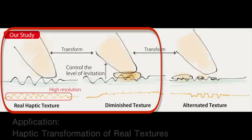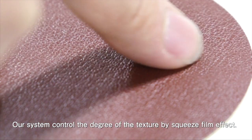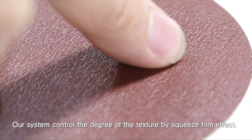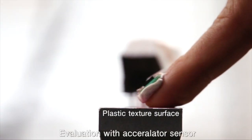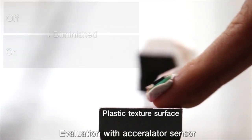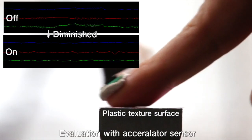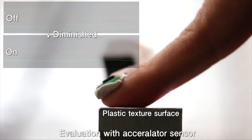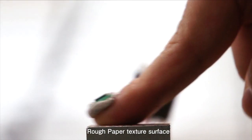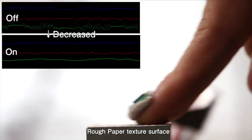The haptic transformation of real textures: Our system controls the degree of texture by squeeze film effect. The texture is diminished when the squeeze film is thick enough. The texture is decreased when the squeeze film is thinner than the height of the peak of the texture.